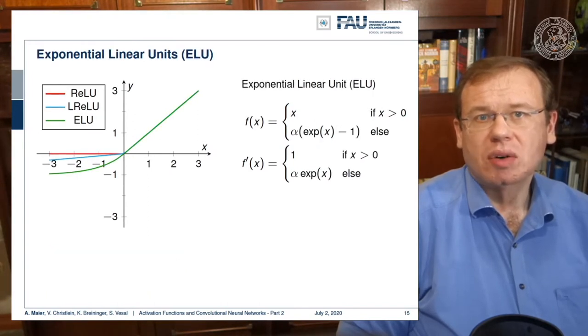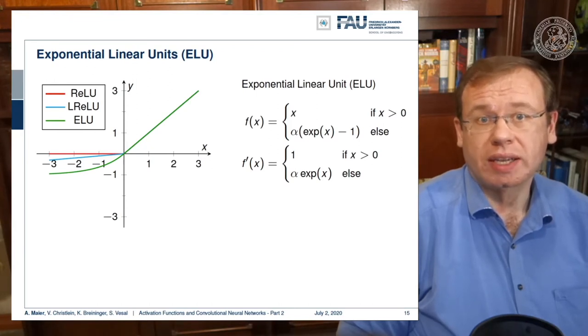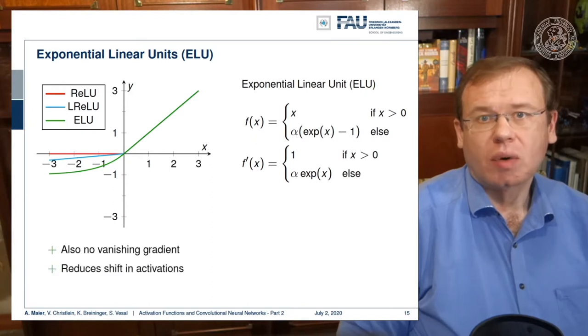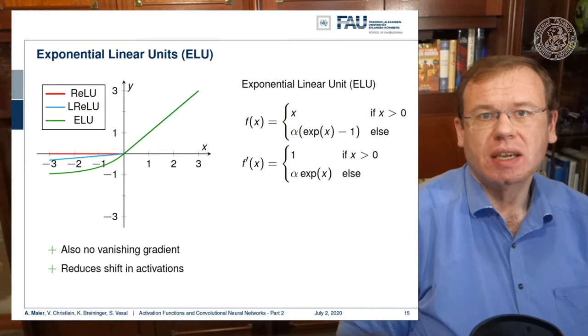There are also exponential linear units and here the idea is that you find a smooth function on the negative half space that slowly decays. You can see here we set it to alpha times exponent of x minus one. This then results in derivatives one and alpha exponent x. So also an interesting way to get a saturating effect. Here we have no vanishing gradient and it also reduces the shift in activations because we can get also negative output values.